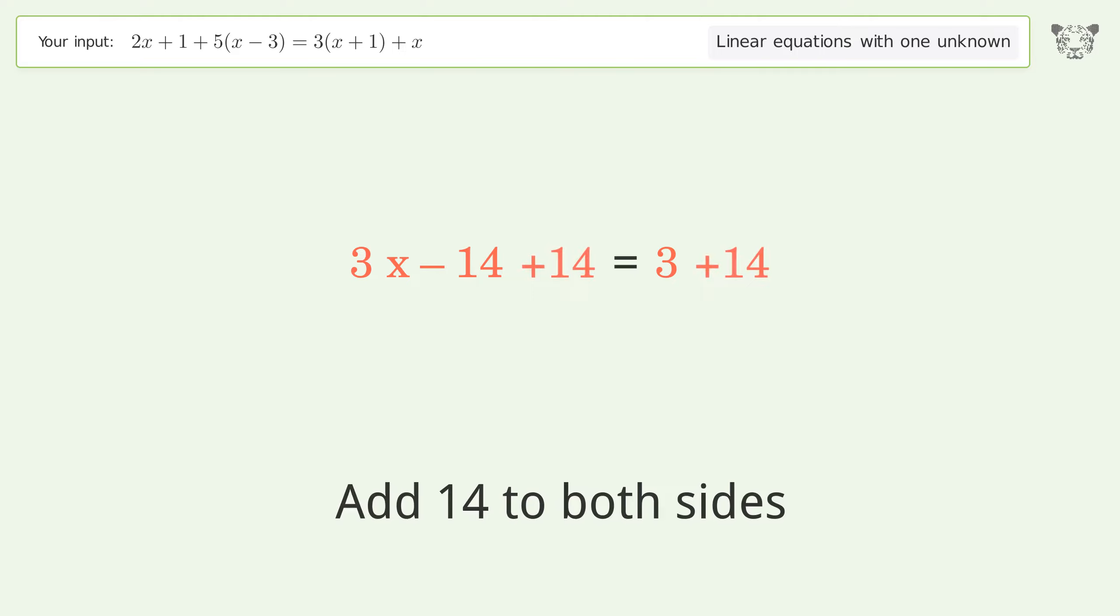Group all constants on the right side of the equation. Add 14 to both sides. Simplify the arithmetic.